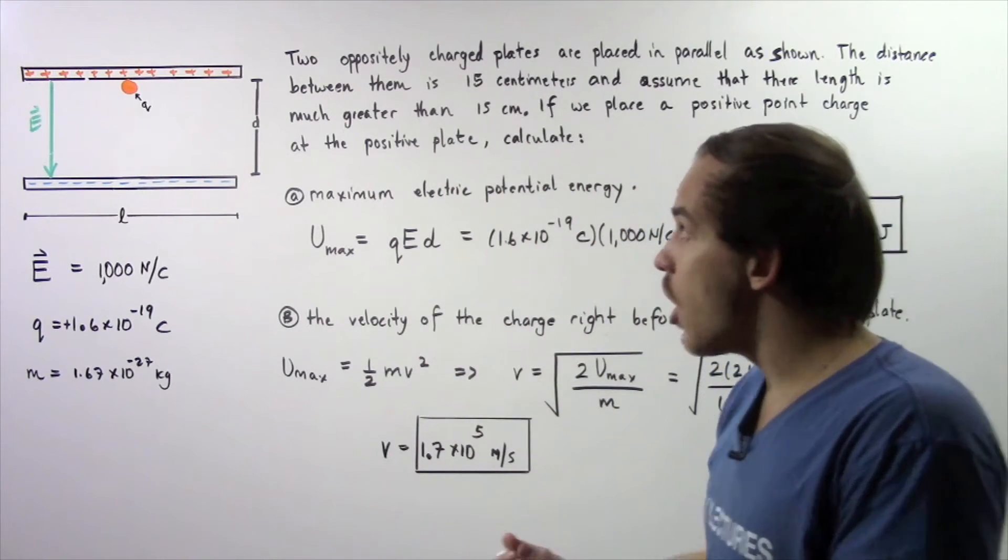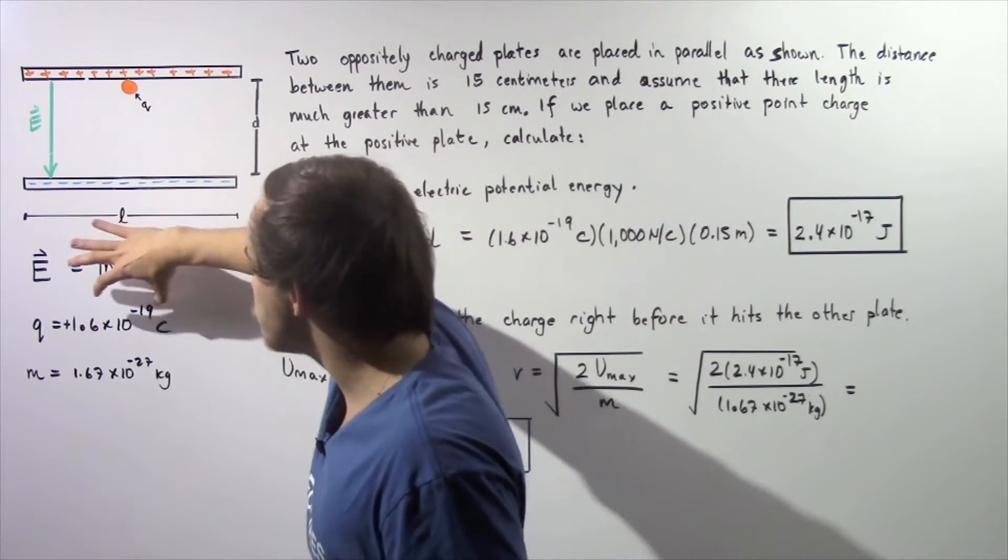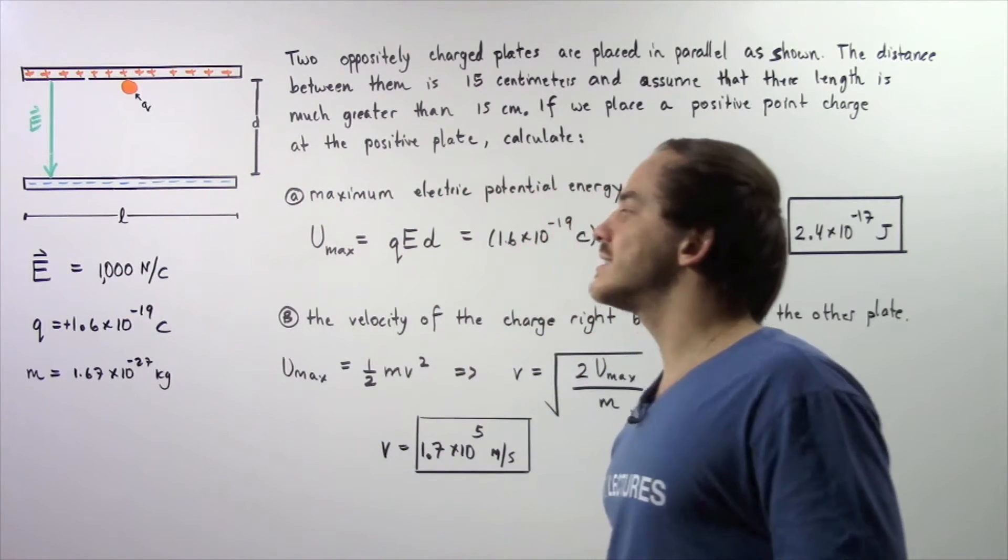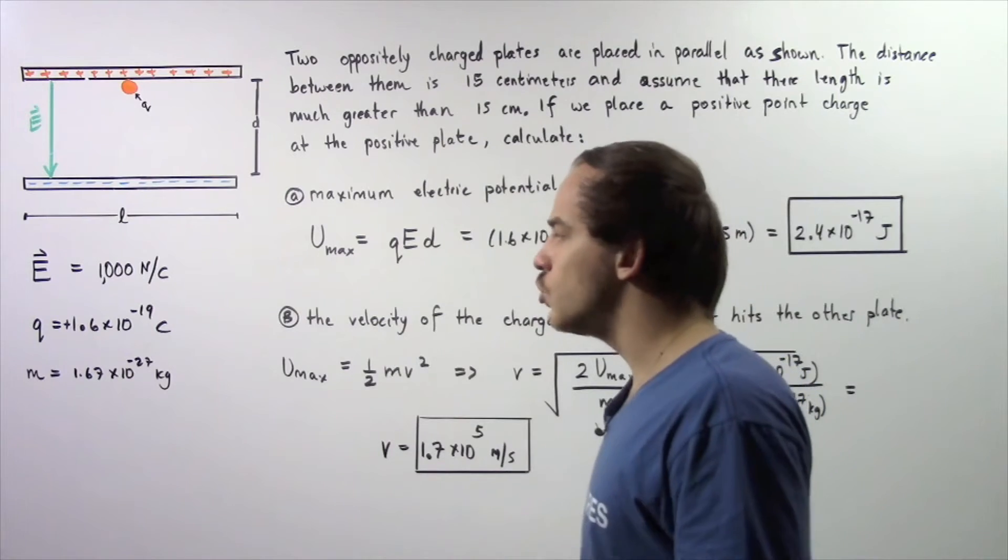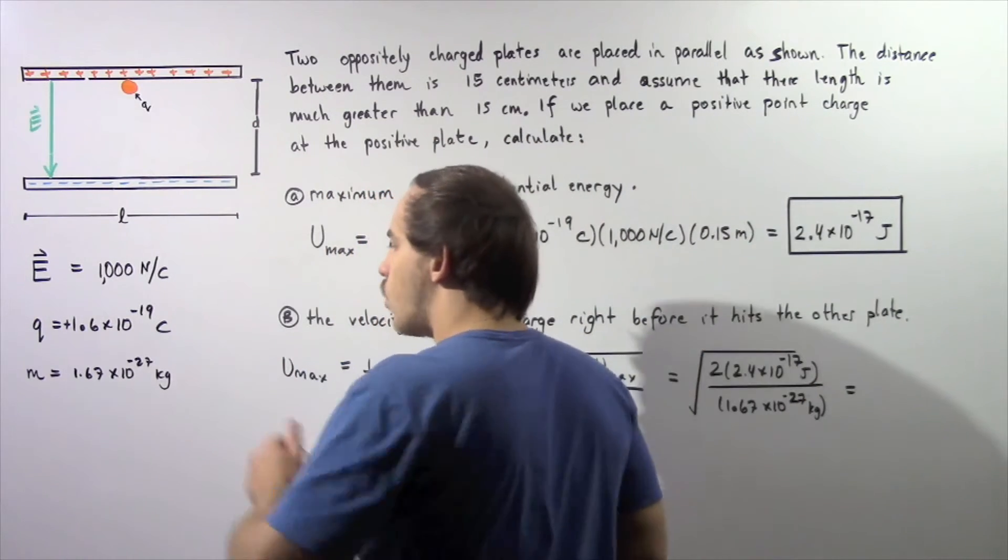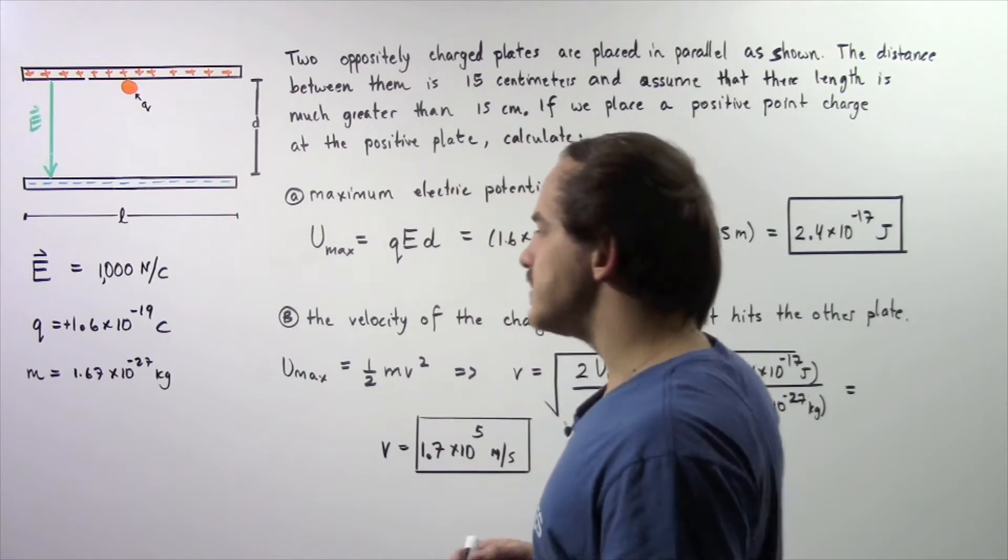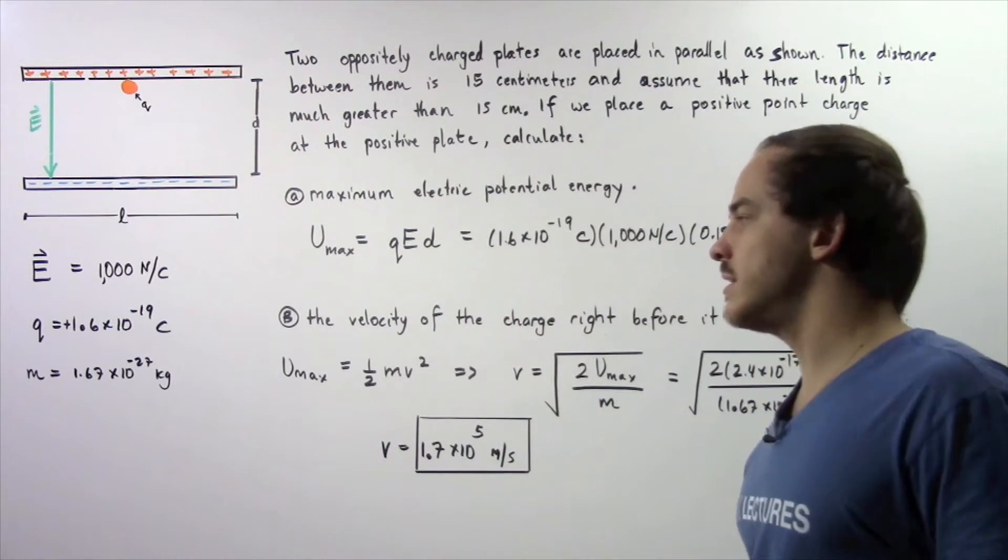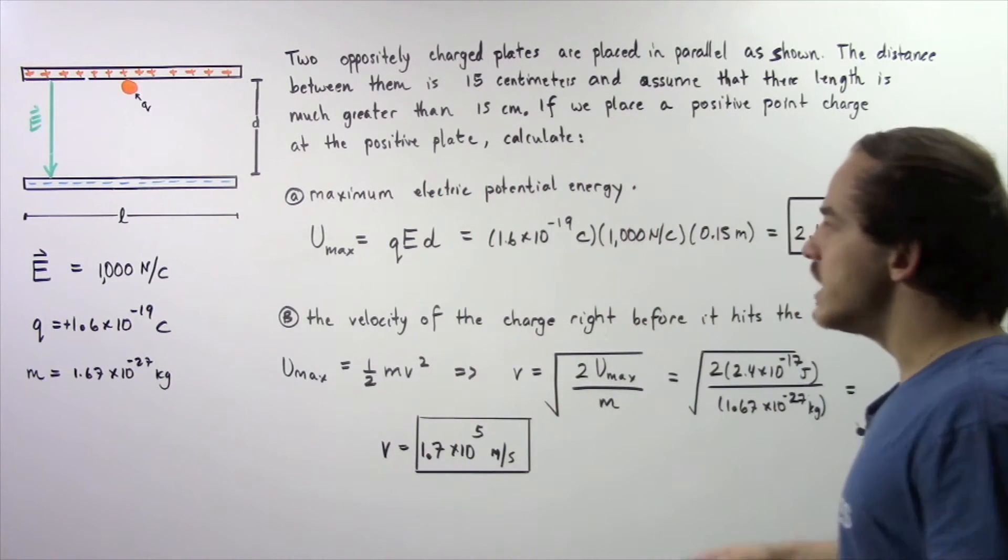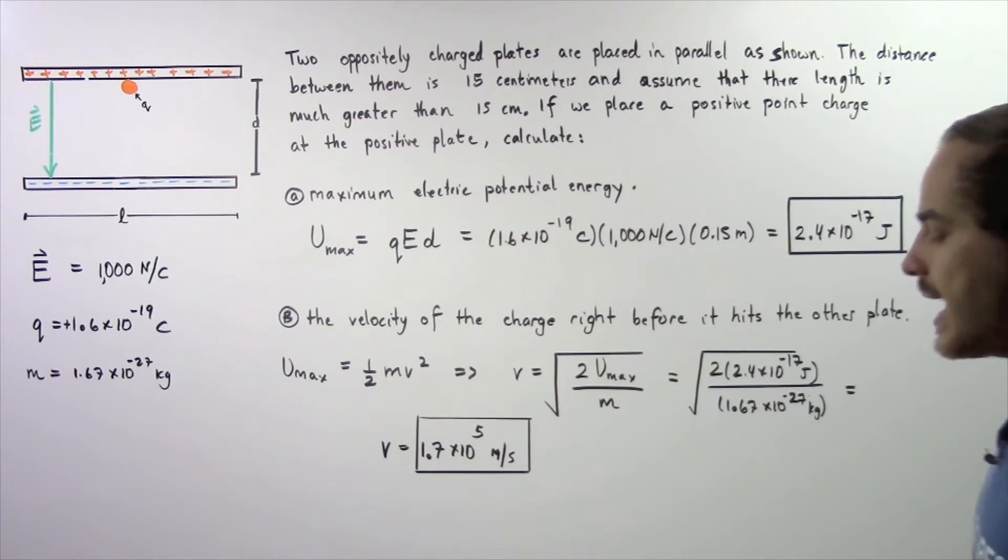The quantity of charge of our electric point charge is given by this value: positive 1.6 times 10 to the negative 19 coulombs. The mass of this electric charge is 1.67 times 10 to the negative 27 kilograms. This is essentially a proton. Now let's begin with part A.